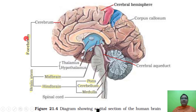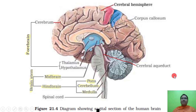Looking at the diagram: the forebrain includes the cerebrum with its cerebral hemispheres, corpus callosum, thalamus and hypothalamus. The midbrain contains the cerebral aqueduct. The hindbrain includes pons varoli, cerebellum, and medulla oblongata. The medulla oblongata is continued into the spinal cord.